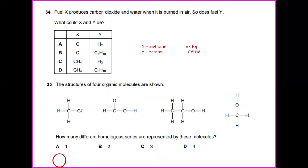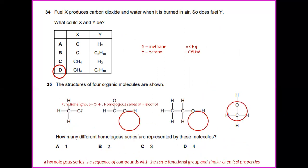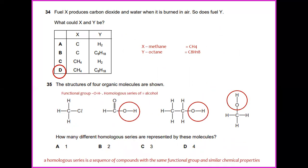The structure of four organic molecules are shown. This is under functional group of OH and in terms of the homologous series of alcohols. A homologous series is a sequence of compounds with the same functional group and similar chemical properties. So the question now is how many different homologous series are represented by these molecules? So they are 1, 2, and 3. So the answer would be C.